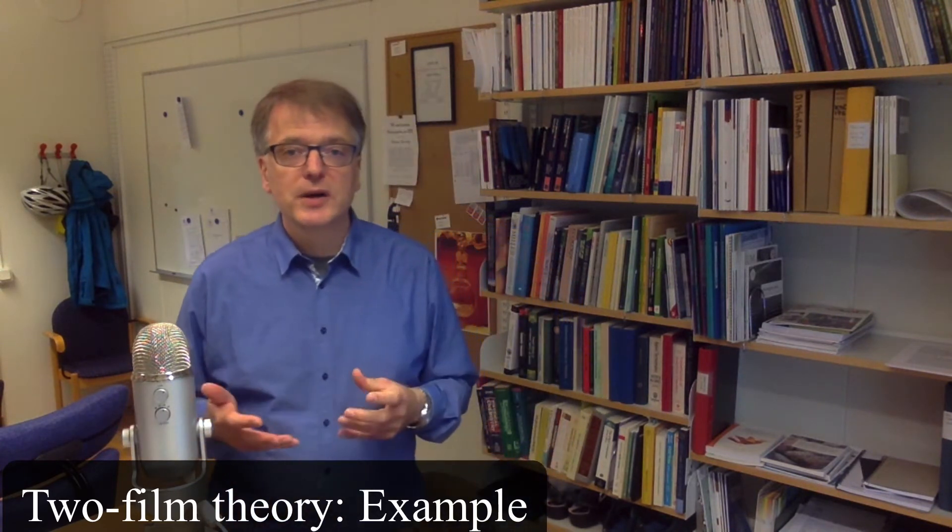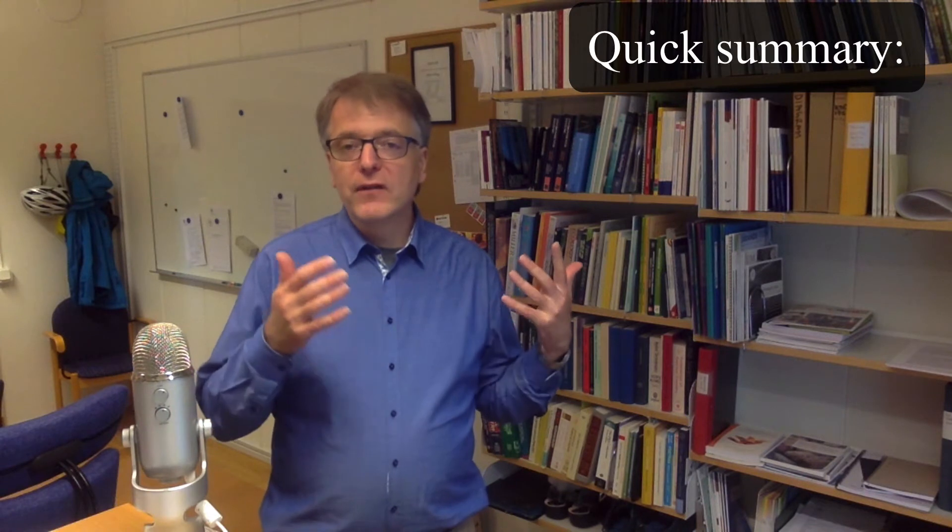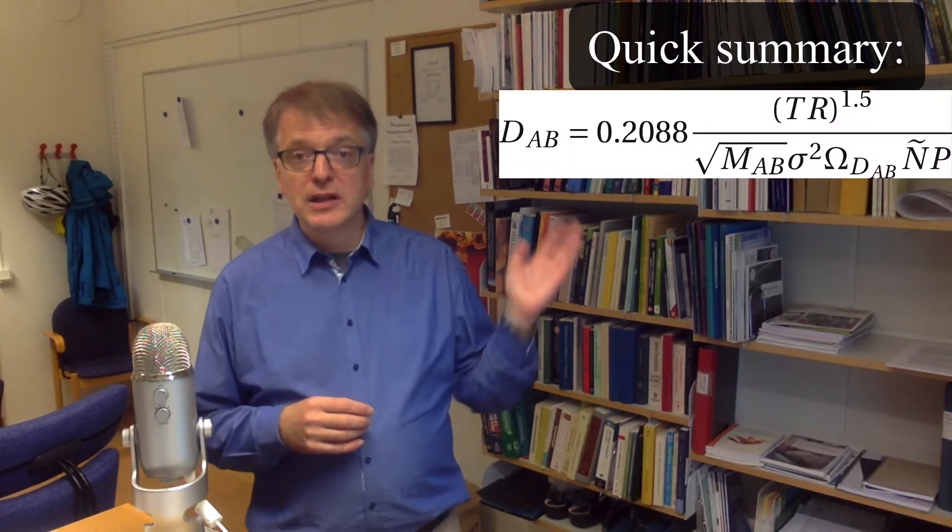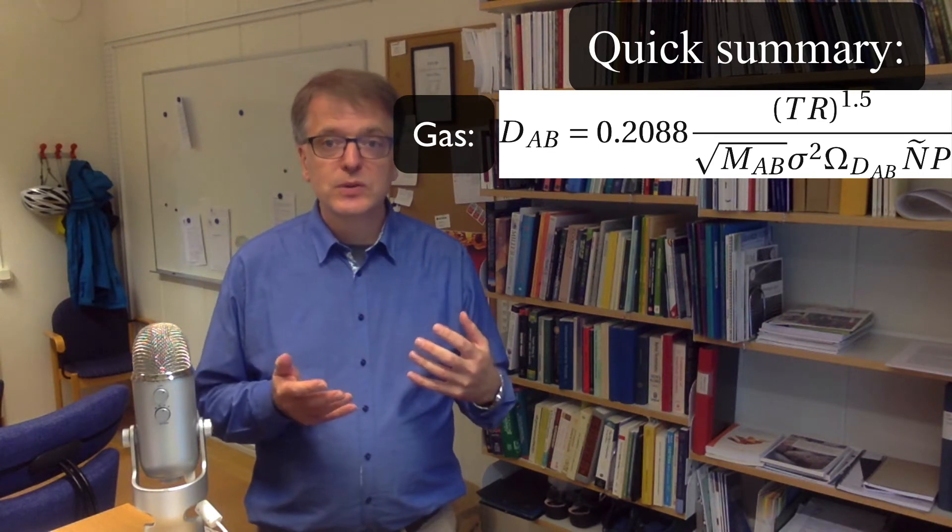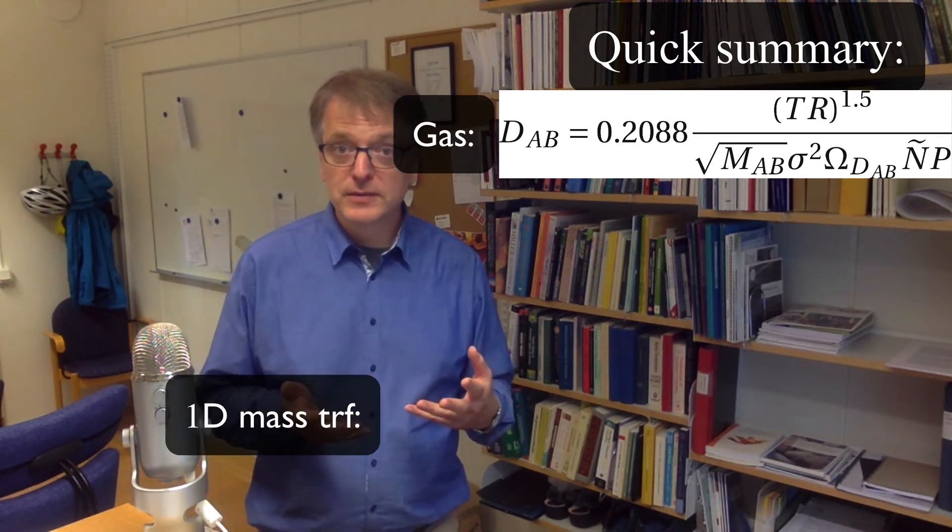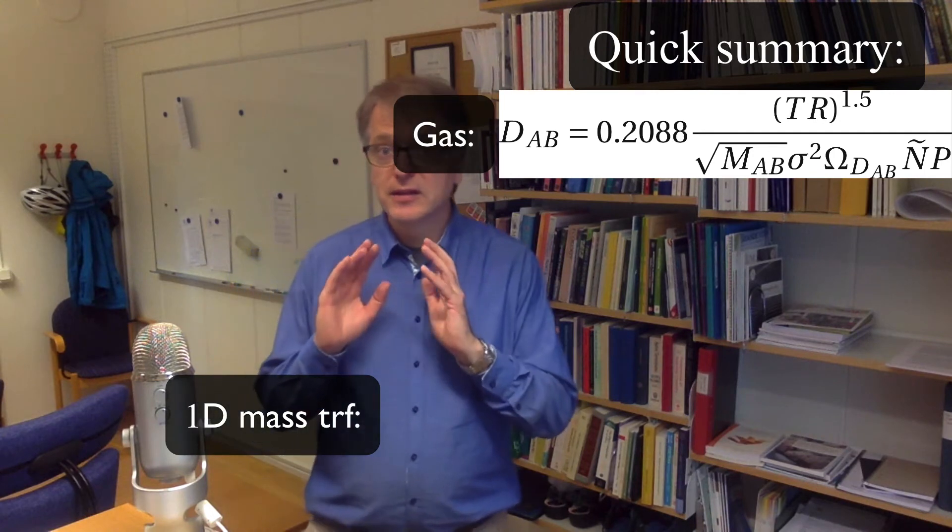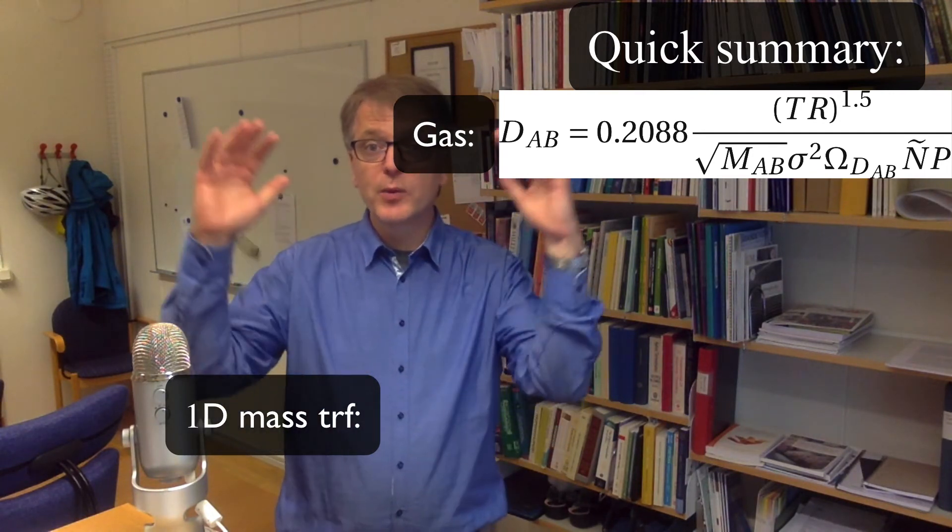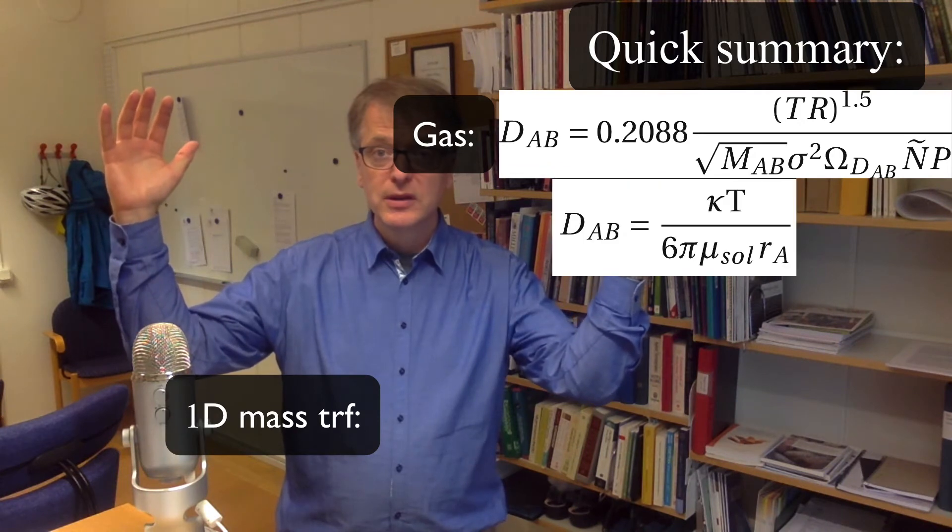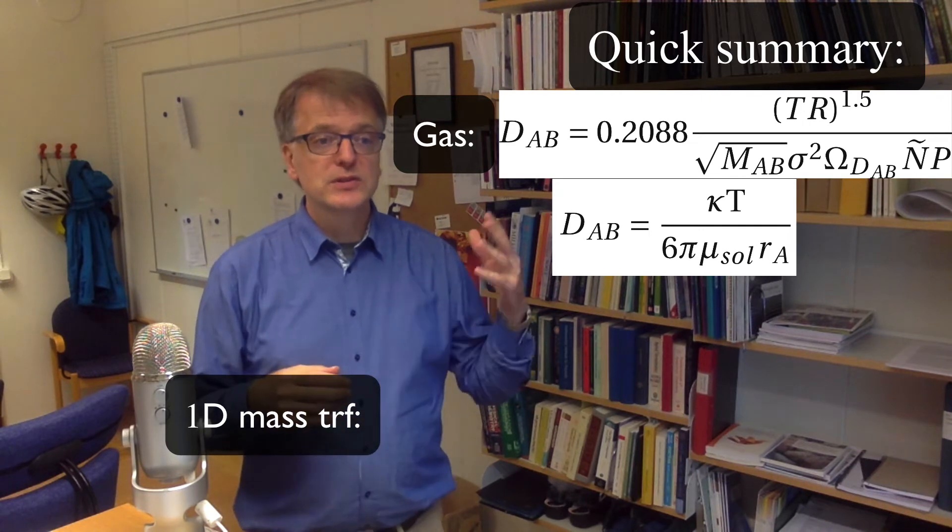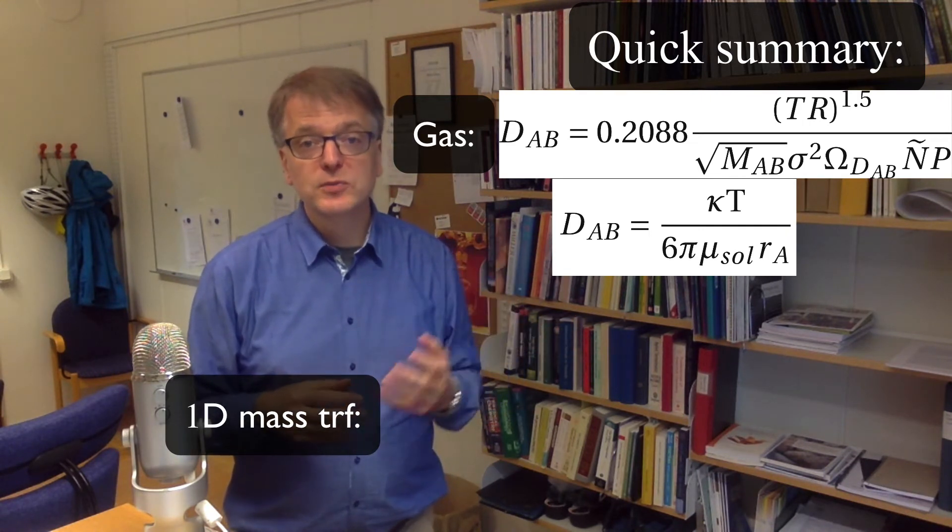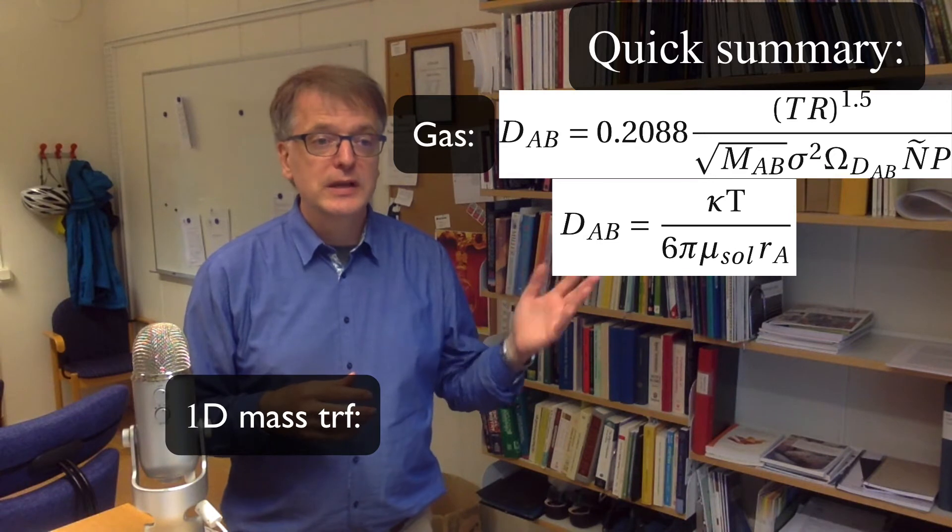So what have we talked about so far? We have talked about how to estimate mass diffusivity in gases using an advanced model that looks like this, and then we have talked about how to do the same thing for diffusivity in liquids. And then we said that we have to distinguish between a situation where we have a large molecule and a situation where you have a small molecule. For large molecules we use Stokes-Einstein's equation and for small molecules we use Wilke-Chang equation.